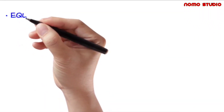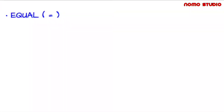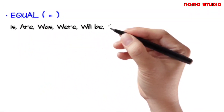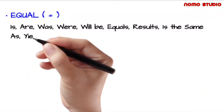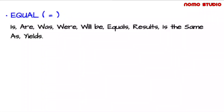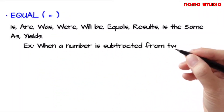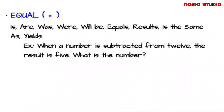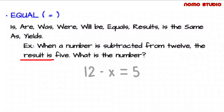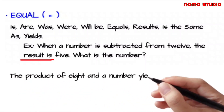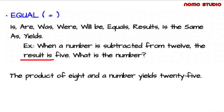What about the equal sign? Common English terms used to denote an equal sign are: is, are, was, were, will be, equals, results in, is the same as, and yields. For example, 'when a number is subtracted from 12, the result is 5' can be written as 12 minus x equals 5. Another example: 'the product of 8 and the number yields 25' can be written as 8x equals 25, since 'yields' signifies an equal sign.